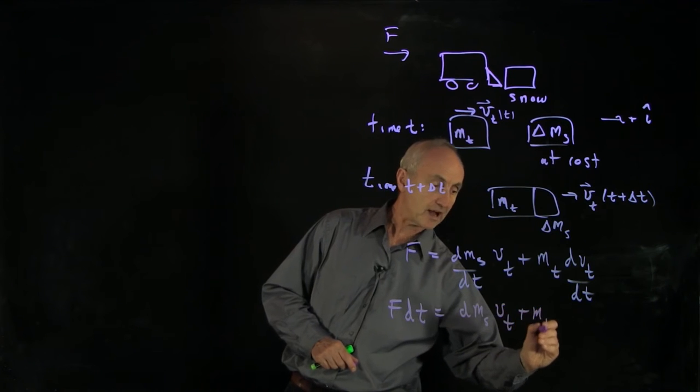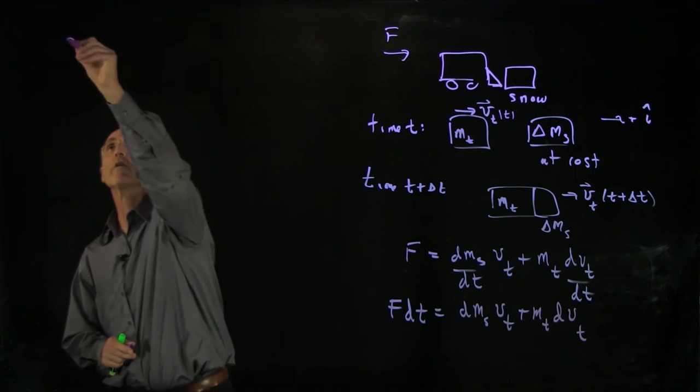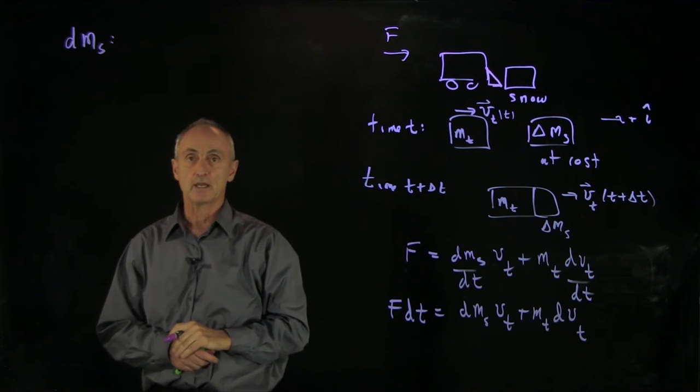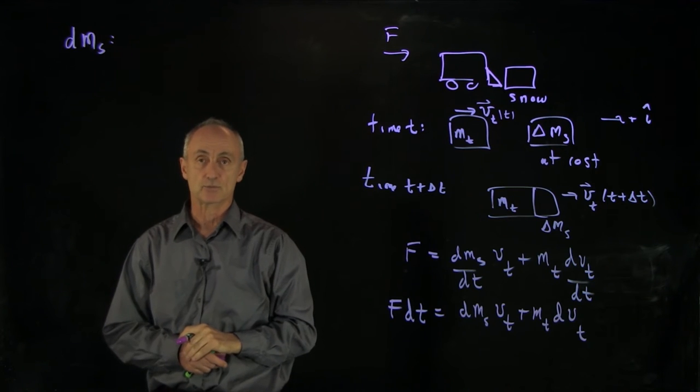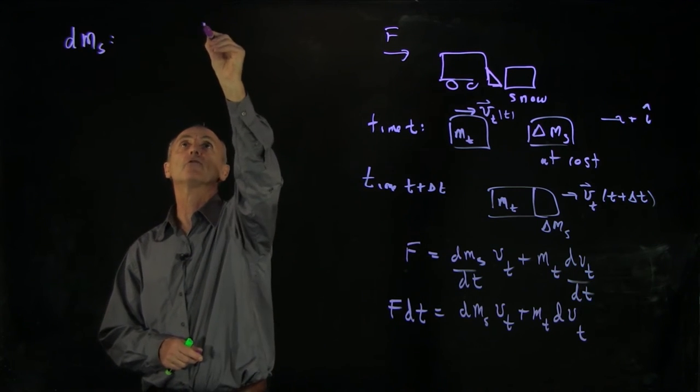we have the following equation. And now what we want to consider is we want to focus on how much dms is picked up in our infinitesimal time dt. So one way to think about that is let's do a little drawing.